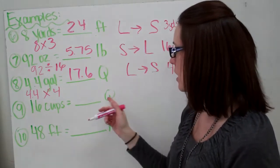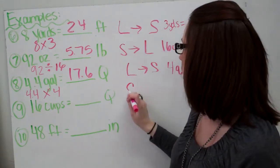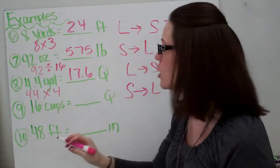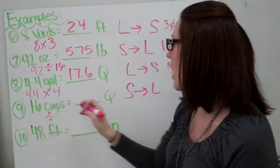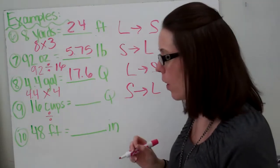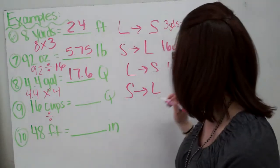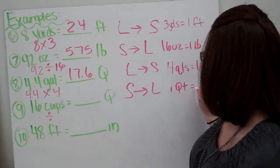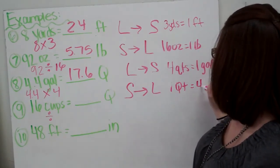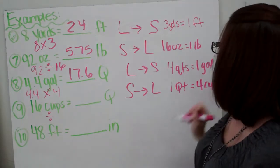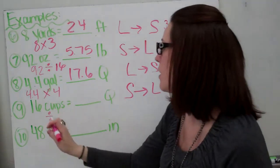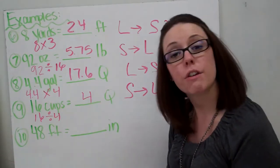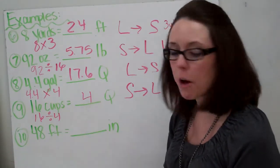16 cups to quarts. We know we're going from small to large, so we're going to divide. We know that one quart is four cups, so 16 divided by four gives us four quarts. So four quarts is the same as 16 cups.